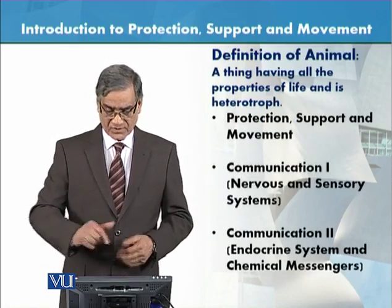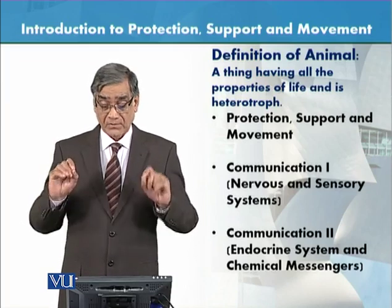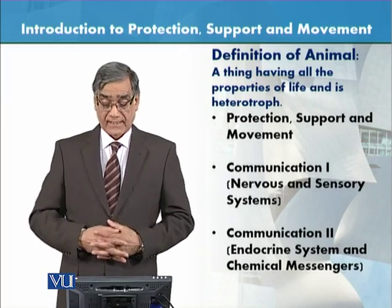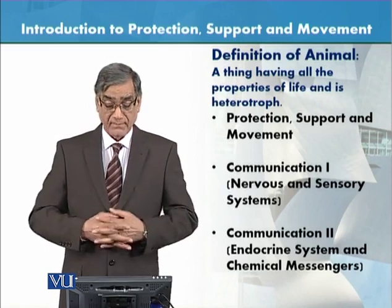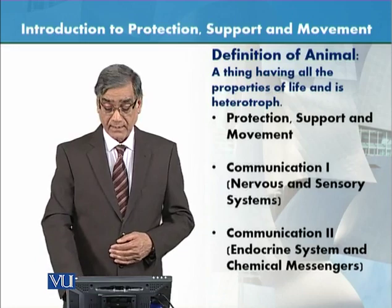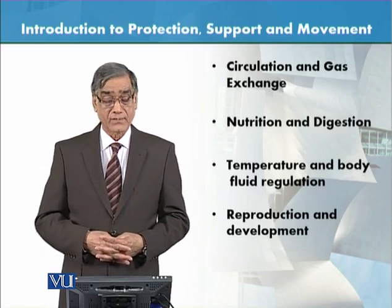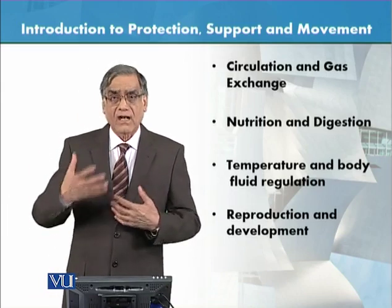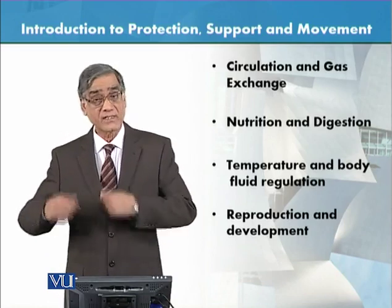In this course we will be studying: first, protection, support, and movement — this will be our first chapter, covered in detail in the next module. Then communication 1, which pertains to the nervous system and sensory systems. Then communication 2, which pertains to the endocrine system and chemical messengers — the hormones. Next is circulation and gas exchange, also called the transport system, which covers the blood, the heart, and gaseous exchange of carbon dioxide and oxygen.